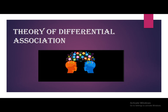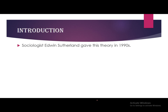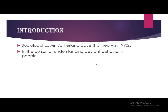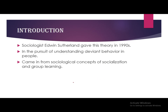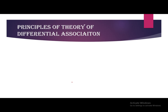The topic of our discussion is the theory of differential association. Sociologist Edwin Sutherland gave this theory in the late 1930s. He was trying to understand the behavior of deviant people — where did they learn this behavior, and how did it come into their personality? In pursuit of that understanding, he gave this theory, which directly comes from the sociological concepts of socialization and group learning.